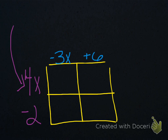A lot of students ask me: does it matter who goes on the side and who goes on the top? That's a good question, and the answer is based on the commutative property — no, it doesn't matter what order or direction you multiply, as long as you're multiplying. You could put the 4x minus 2 on top and the negative 3x plus 6 on the side, or switch sides — none of it matters. Let's put these together so you can see the process, then I'll let you try one on your own.